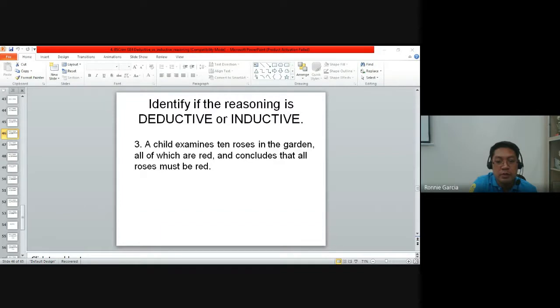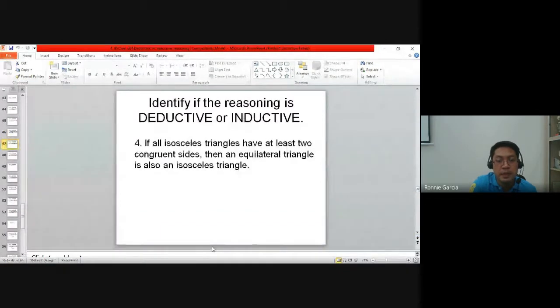Let's have number four: If all isosceles triangles have at least two congruent sides, then an equilateral triangle is also an isosceles triangle. Is it deductive or inductive?